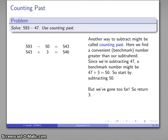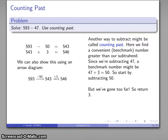We don't have to write it out this way—we could also show this process using an arrow diagram. Here I am at 593, subtracted 50, that's the easy subtraction, went too far, add 3 back to get to 546 as my difference.